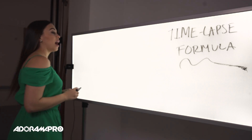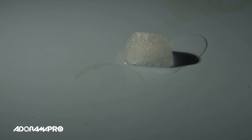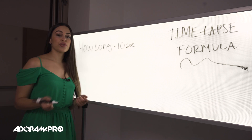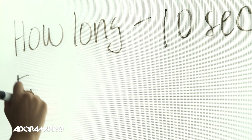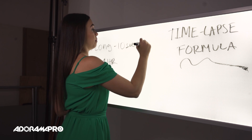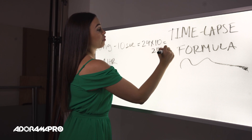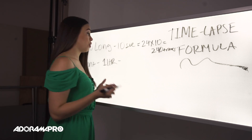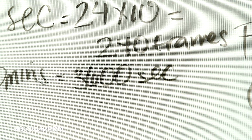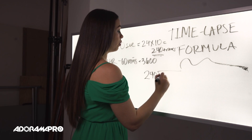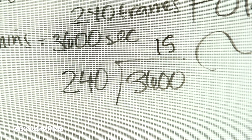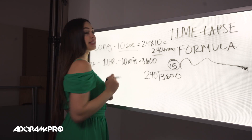Hey guys, I'm going to show you how easy the math is to set up time-lapse. The first thing you need to do is figure out how long you want your video to be — let's say 10 seconds. The second thing is you need to know how long your event is going to be — this event is one hour. Typically people shoot at 24 frames per second, so you multiply 24 times 10, which gives us 240 frames total. One hour is 60 minutes, which is 3,600 seconds. To figure out the intervals between shots, you divide 3,600 by 240, which gives you 15 seconds.